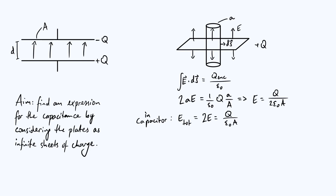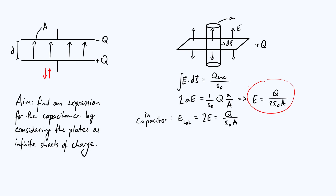What about outside the capacitor — above the negative plate or below the positive plate? Consider a point below the positive plate: the field from the positive plate pushes downwards at that point, while the field from the negative plate still pulls upwards. As we saw from the infinite sheet expression, the electric field doesn't depend on how far away you are from the plate. So you've got two equal and opposite electric field vectors adding together, giving zero electric field outside the capacitor. Again, this is a bit of an approximation since the plates are not actually infinite, so you will get a small electric field outside, but it's certainly much smaller than inside.